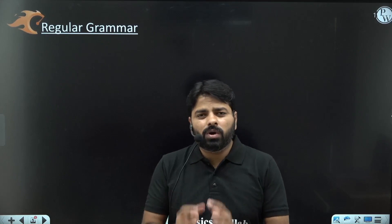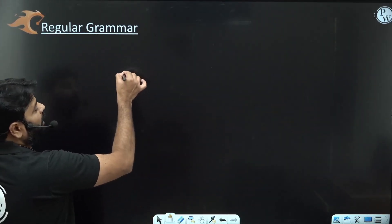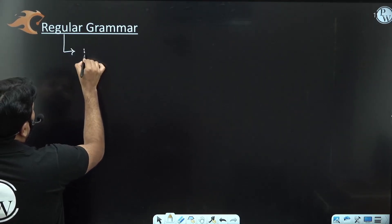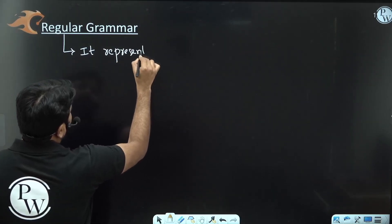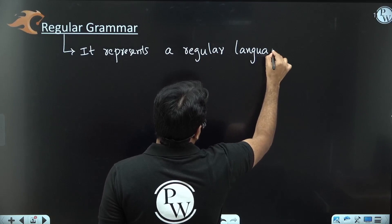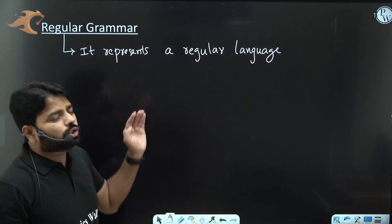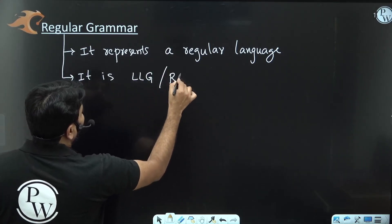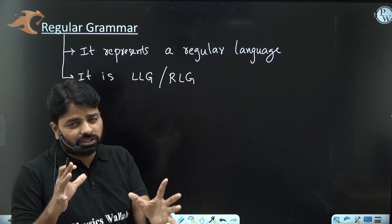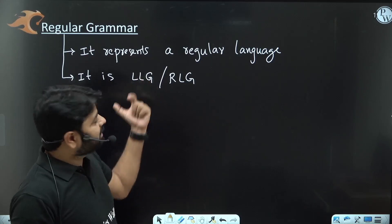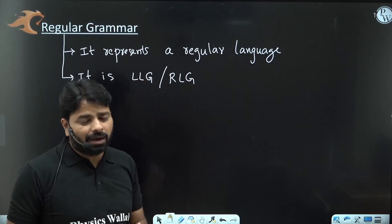A regular grammar is also a collection of four parameters, but here we restrict how the rules or productions appear. This regular grammar represents a specific language called a regular language. Every regular grammar is going to represent a regular language. A regular grammar depends on two types: LLG (Left Linear Grammar) or RLG (Right Linear Grammar). Do not combine the two definitions. The grammar should be entirely LLG or entirely RLG to be called a regular grammar.